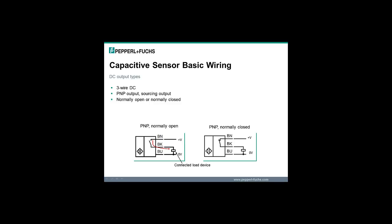The most common capacitive sensor output type is the 3-wire DC PNP output. As shown in the diagram, this output supplies voltage and current to the connected load. For the normally open PNP output, the load is connected to plus voltage when the sensor is activated. For the normally closed output, the load is connected to plus voltage when the sensor is deactivated.